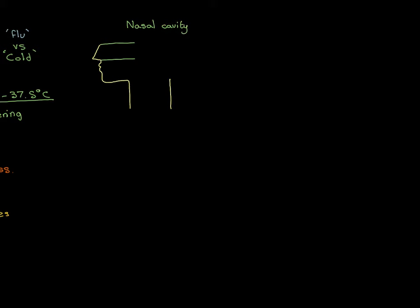Now let's put on the oral cavity, because you can breathe through it as well. The nasal cavity and the oral cavity connect to one another at the back via the pharynx. Here is the pharynx in blue, continuing on back from the nasal cavity and connecting it with the oral cavity. The pharynx is the proper term for the throat.